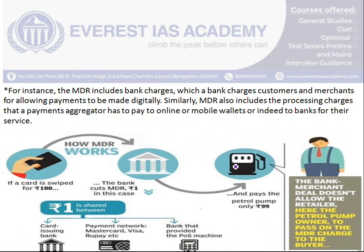Let's understand what the Merchant Discount Rate (MDR) is and how it works. Suppose you go to a shop and swipe your card for 100 rupees. The bank normally charges a fee — say 1 rupee as the MDR. Then only 99 rupees will be credited into the account of the shop or petrol bunk where you swiped. That 1 rupee which is deducted is what we refer to as the MDR or Merchant Discount Rate.